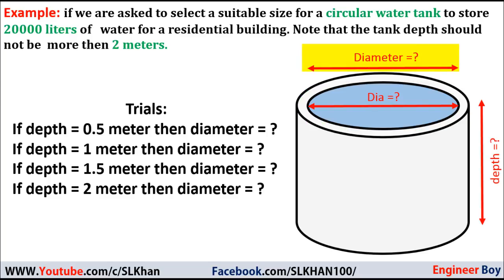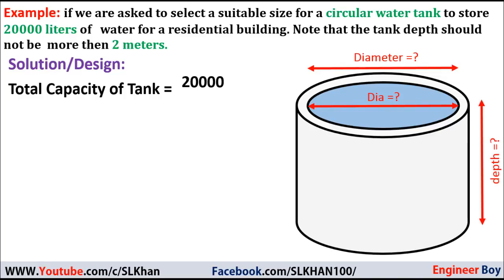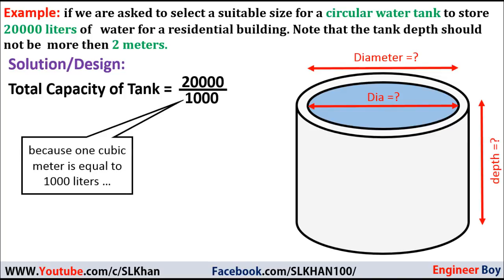Moving into the solution: the tank capacity is 20,000 liters of water, which can be converted into cubic meters by dividing by 1,000, because 1 cubic meter equals 1,000 liters. So 20,000 divided by 1,000 equals 20 cubic meters — that is the capacity of the tank.